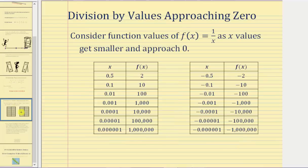Now let's consider division by values approaching zero. We know division by zero is undefined, but what happens when we have division by values approaching zero? We'll consider the function f(x) = 1/x and see what happens to the function values when we divide by values getting smaller and smaller approaching zero, approaching zero from both the positive side and the negative side.